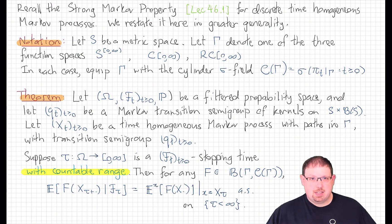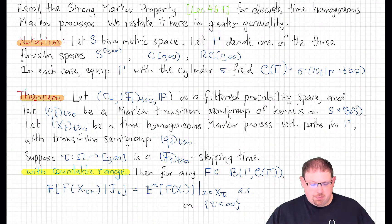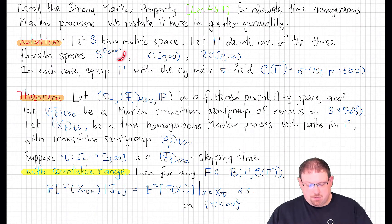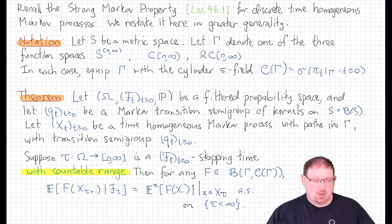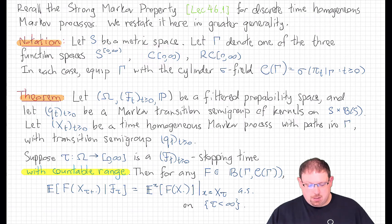In this context, we're going to heavily rely upon the regularity of the paths of the process. To be careful, let's introduce some notation. Our state space is going to be a general metric space S, which we usually assume is separable and complete. We'll let gamma denote one of the three function spaces where the paths of our processes have lived. We could take the full space of all functions from the positive time interval into the state space, but that's not going to cut it for what we'll need to do in the continuous time setting.